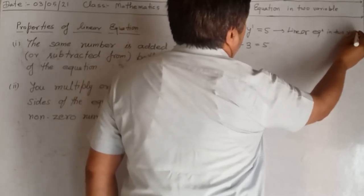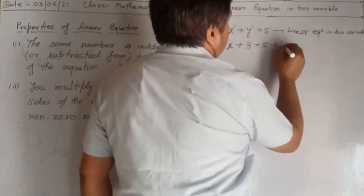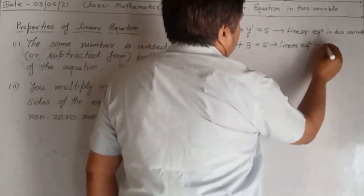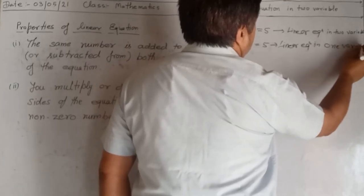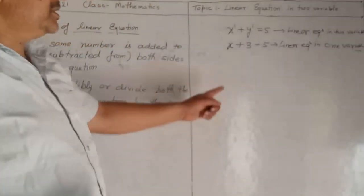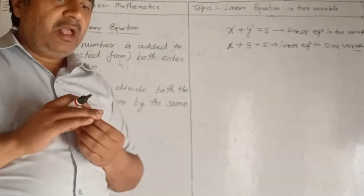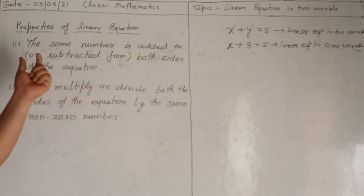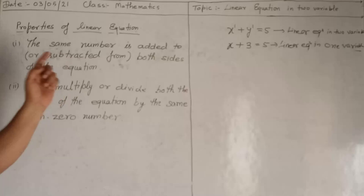That is a linear equation in two variables, and that is a linear equation in one variable. Now, some properties of a linear equation: the first property says that the same number can be added to or subtracted from both sides of the equation.